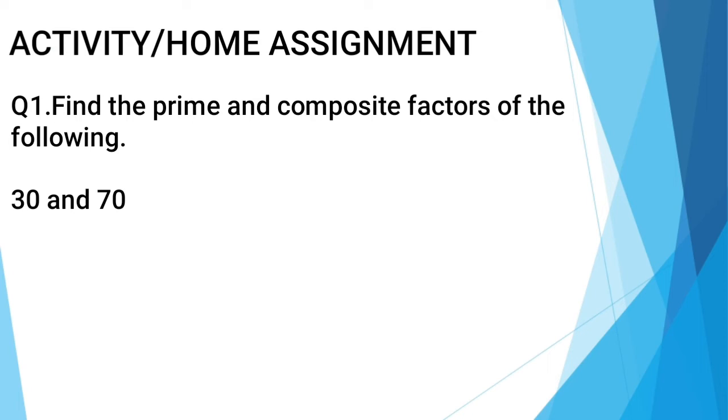Now it's an activity and home assignment time. Find the prime and composite factors of the following. First number is 30. Who will tell me all the factors of 30? Yes, brilliant. The factors of 30 are 1, 2, 3, 5, 6, 10, 15 and 30.